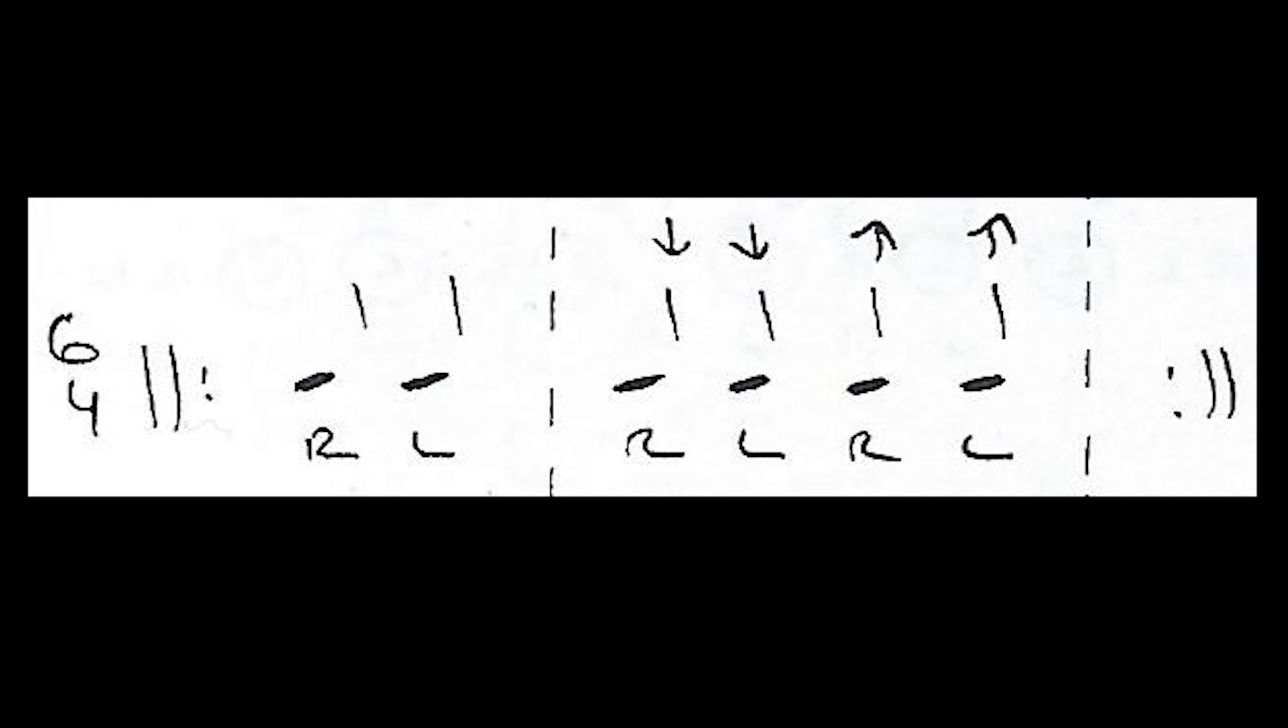And we can morph this rhythm again by using equal value notation. Here's the six-stroke roll using equal value slow motion notation.